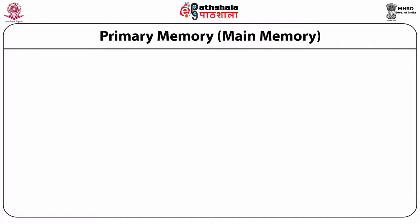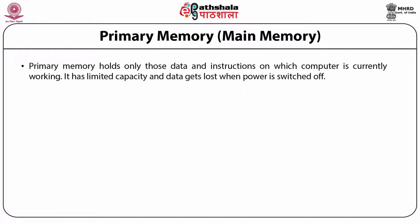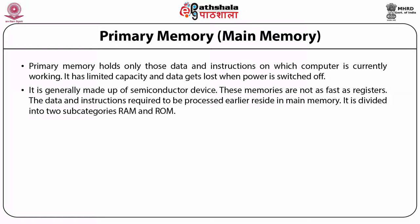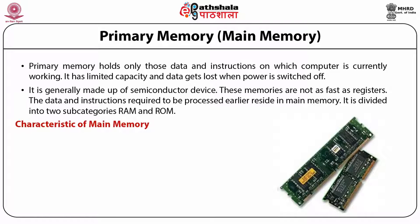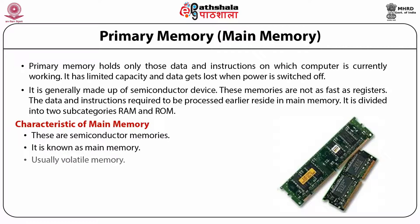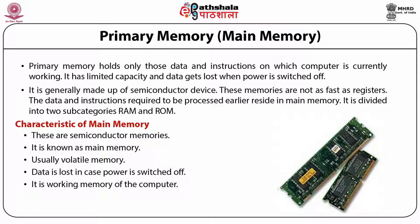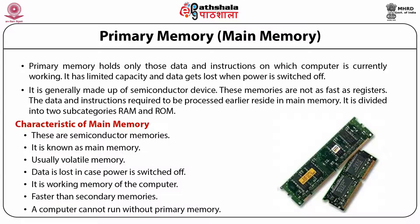Primary memory holds only the data and instructions on which the computer is currently working. It has limited capability and data is lost when power is switched off. It is generally made up of semiconductor devices and is not as fast as registers. It is divided into two subcategories: RAM (random access memory) and ROM (read-only memory). Primary memory is volatile, is the working memory of the computer, is faster than all secondary memories, and a computer cannot run without it.